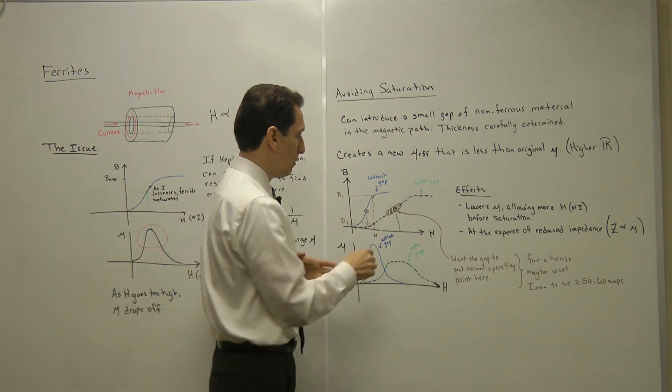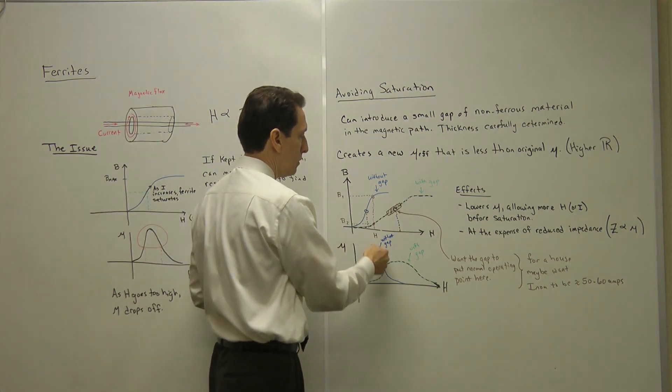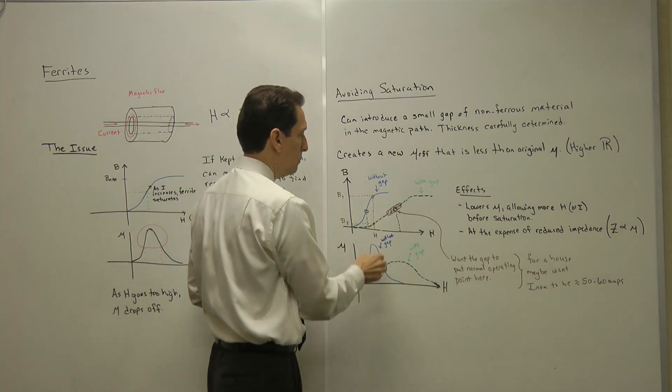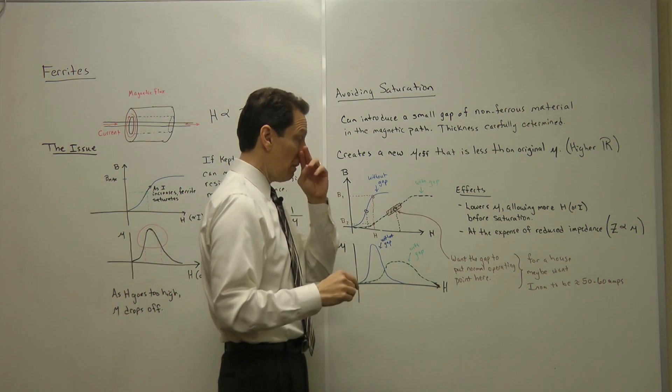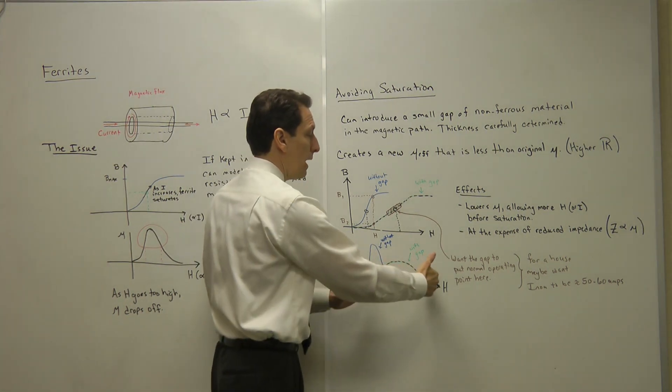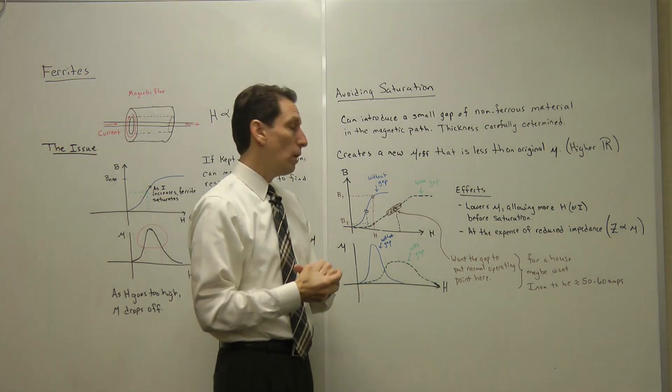What that does to the permeability curve is the original permeability curve looked like the blue one here. It's narrow, it's high peaked. By introducing the gap, it moves the permeability curve out quite a bit further in current, and it also spreads it out, which gives you a nice operating region in which to run.